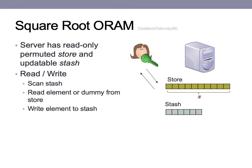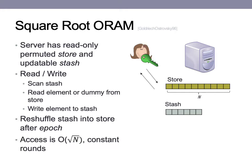For a write, the first two steps are similar. Only a dummy element is read from the stash, and the element written to the stash in the final step is the input element. When the stash becomes full at the end of an epoch, the stash is reshuffled back into the store, removing any duplicated elements. Each access for square root ORAM takes square root of the database size and is constant rounds.